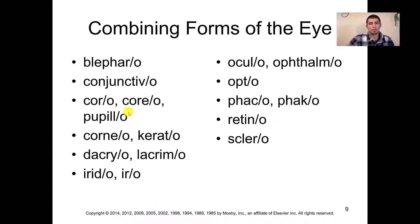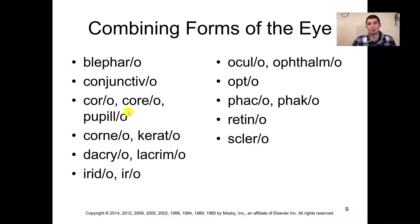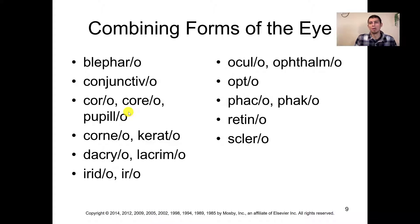Turning your attention to page 520, we see the combining forms of the eye chart. This is going to be your go-to chart for this chapter. I would put a bookmark on the combining forms chart as well as that first anatomy chart, because that's going to help you go back and forth as we look at the rest of these terms throughout the chapter.